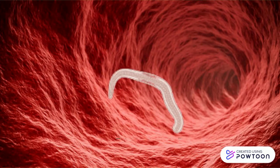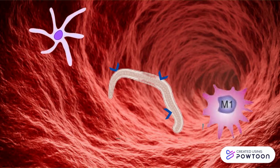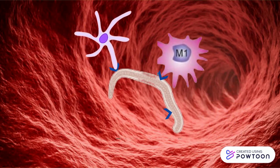If the parasite continues to develop and infection reaches the blood, complement proteins will opsonize the parasite. Dendritic cells and macrophages can then bind to the complement proteins using their complement receptors.